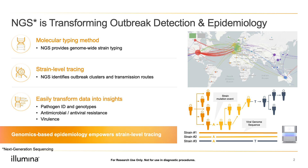Before we dive into the technical details, I want to take a step back and talk about the ways in which next-generation sequencing has dramatically changed, for the better, our understanding of viruses and virology. When it comes to human health, NGS is the tool of choice for assessing viral genome sequencing during outbreaks. Even prior to COVID, we were deeply engaged in tracking outbreaks like Zika and Ebola.